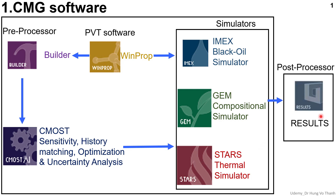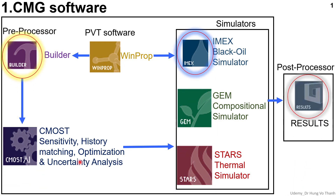The final module is Results. After you perform the simulation, you need to get the results. In CMG, this module helps you display simulation output graphically — including oil saturation maps, gas saturation maps, oil and gas production rates, and all components can be displayed as map views or figures.